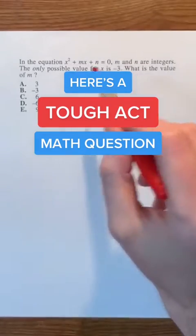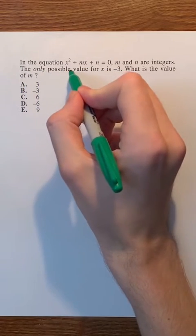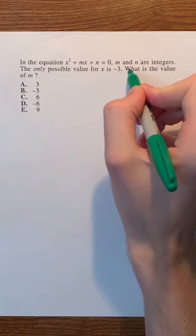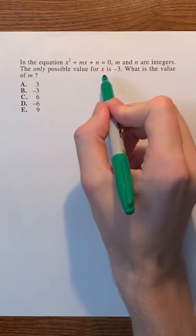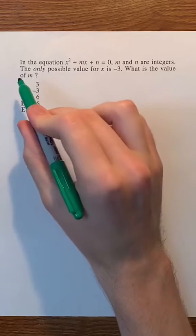Here's a tough ACT math question. In the equation x² + mx + n = 0, m and n are integers. The only possible value for x is -3. What is the value of m?